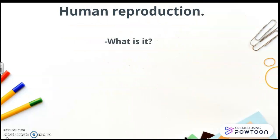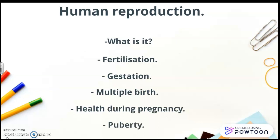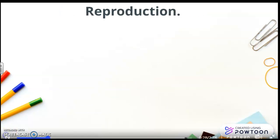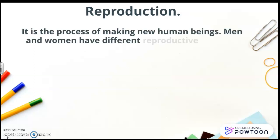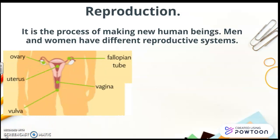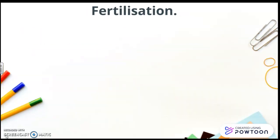Human reproduction. What is it? Fertilization, gestation, multiple births, health during pregnancy, and puberty. Let's start with the reproduction. It is the process of making new human beings. Men and women have different reproductive systems. And here you are, the female reproductive system, with the ovary, the fallopian tubes, the uterus, the vagina, and the vulva. And here you are, the male reproductive system, with the sperm duct, the testicles, and the penis.